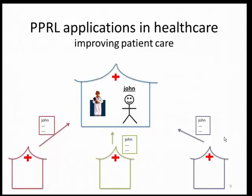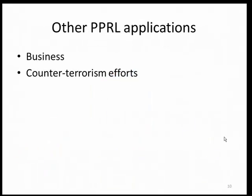Outside of the medical domain, there are other applications for privacy-preserving record linkage. One application is in the business setting, where businesses want to identify their common clients without revealing all of their client lists. A second application is in counter-terrorism efforts — for example, you have a no-fly list of people identified as terrorists who shouldn't be allowed on planes, and those are internationally shared. However, different countries may not want to share their passenger lists, so privacy-preserving record linkage would allow them to identify passengers on the no-fly list without revealing their full passenger list.